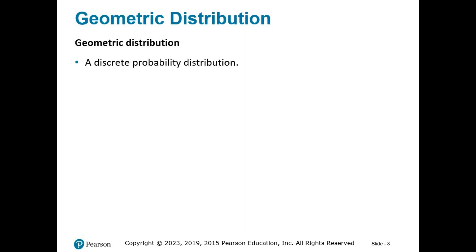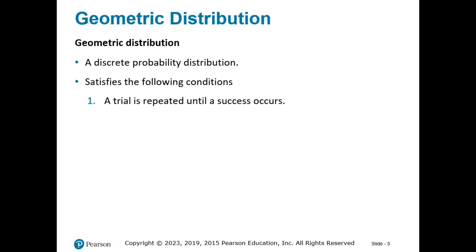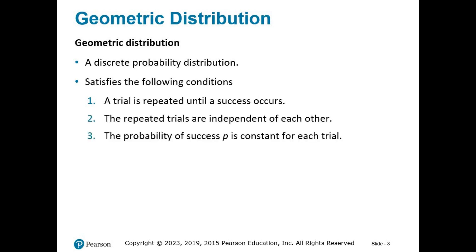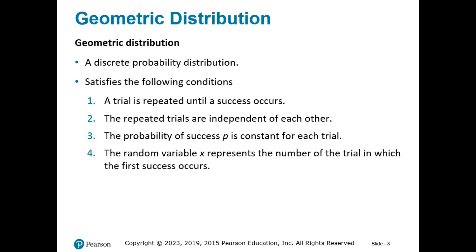Let's start with the geometric distribution. Geometric distribution is a discrete probability distribution, and it satisfies four very specific conditions. A trial is repeated until a success occurs. The repeated trials are independent of each other. The probability of success, P, is constant for each trial. And the random variable X represents the number of the trial in which the first success occurs. That is what you want to watch for when you're determining whether it's a geometric distribution — when something first occurs.